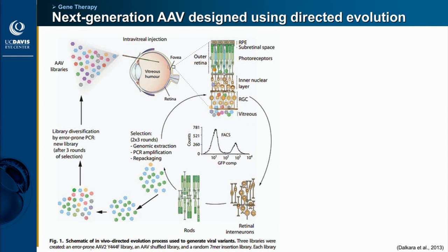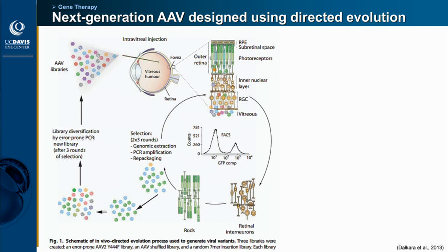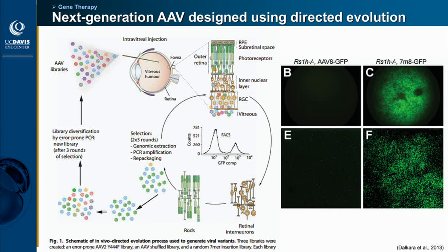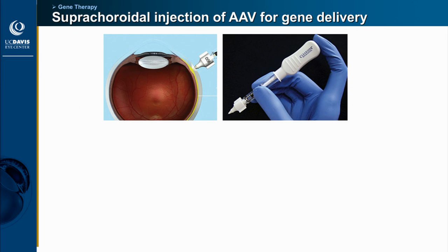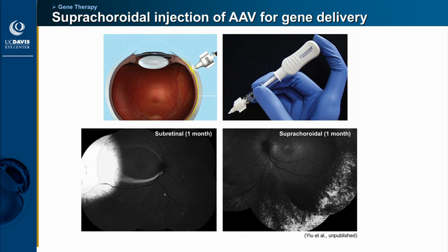We still want to do intravitreal because it's much easier and can be done in clinic, whereas subretinal injections require complex vitreoretinal surgery. To get around this, newer generations of AAV are being developed through directed evolution — generating mutated capsid variants that can be injected intravitreally and still achieve widespread expression. However, results in mice don't necessarily translate to monkeys, and results in monkeys don't necessarily translate to humans. Another strategy is suprachoroidal delivery using a microneedle that penetrates the sclera without entering the retina, which our lab has shown can achieve much more widespread expression compared to the focal bleb of subretinal injection.